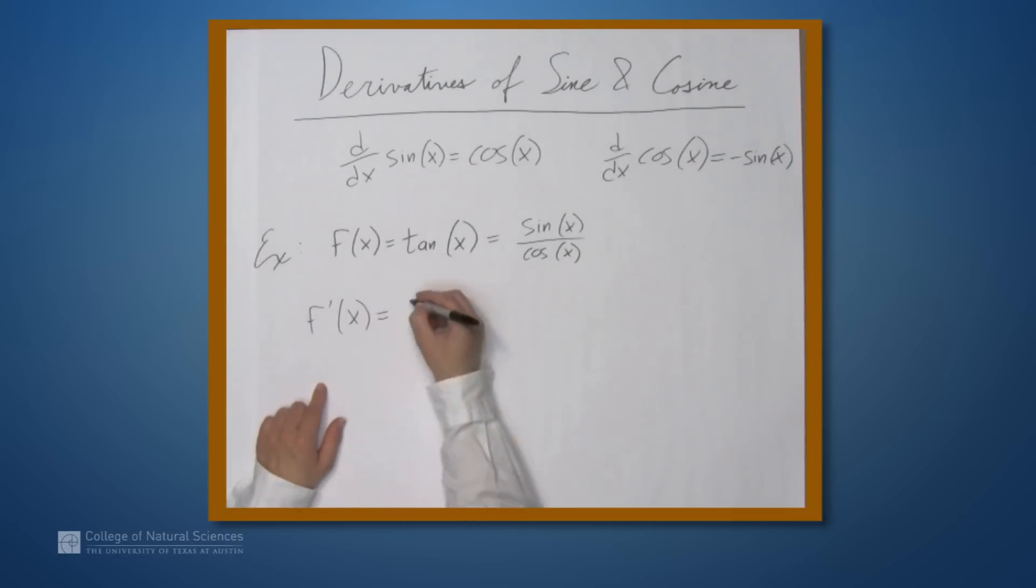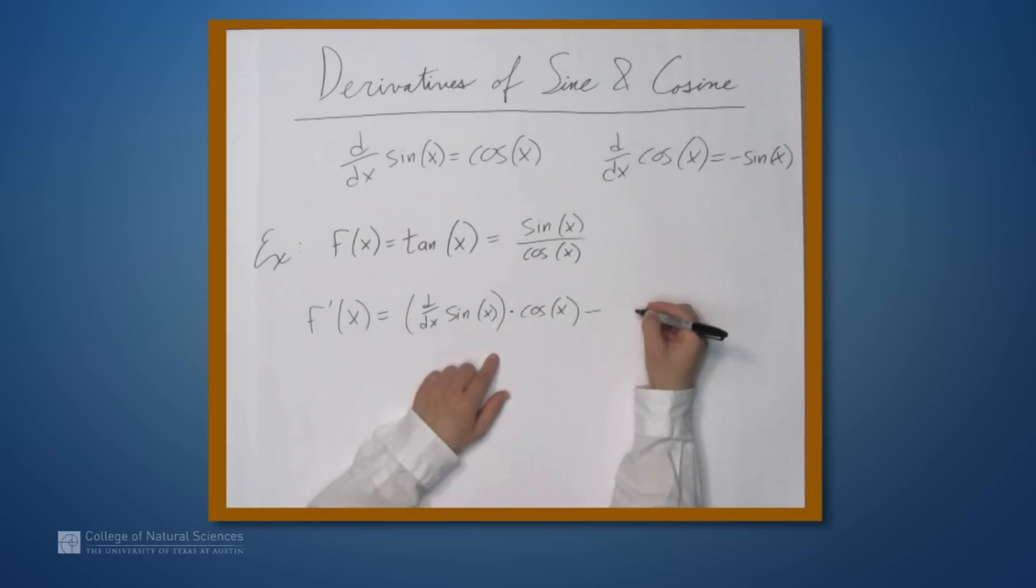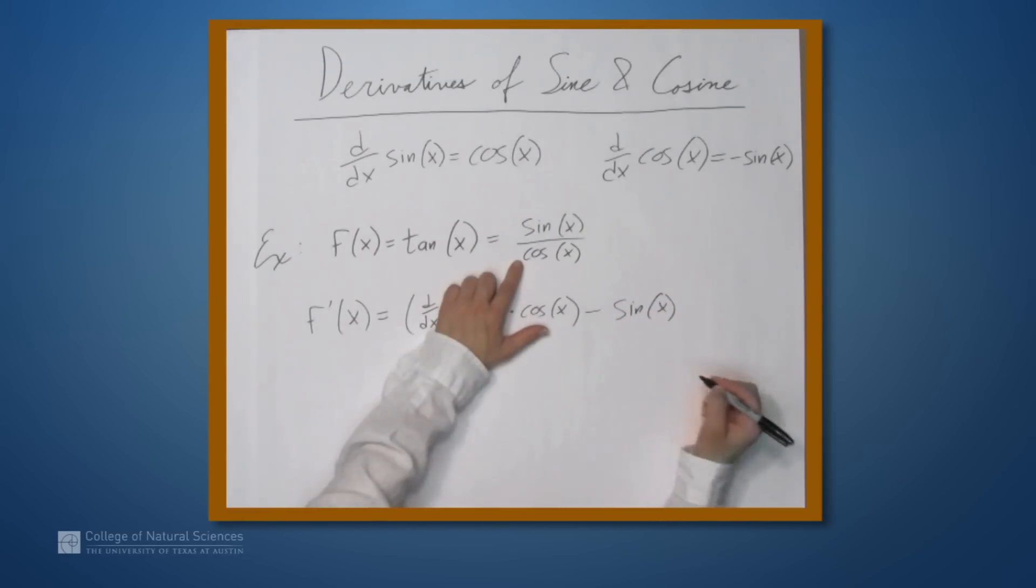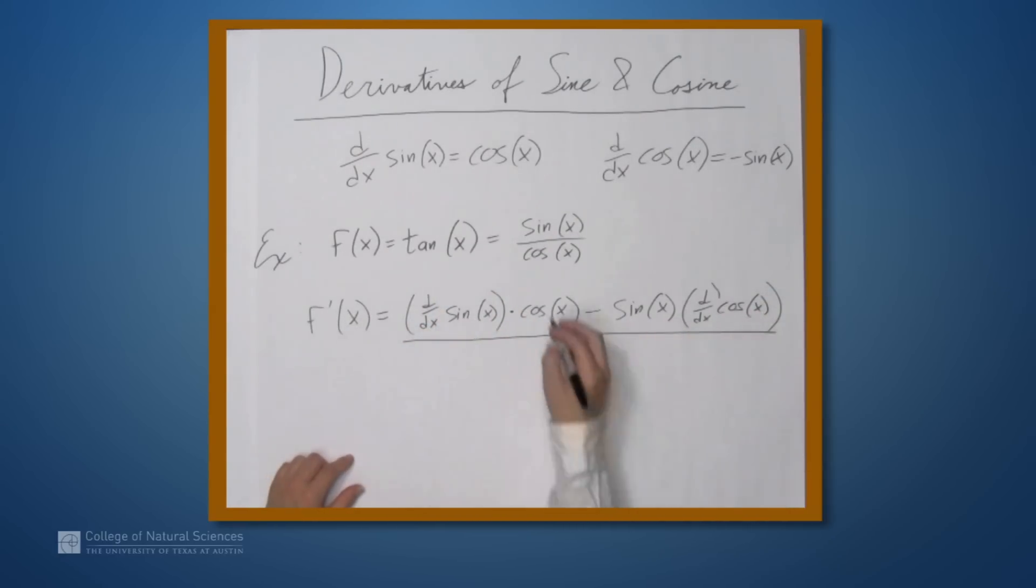So f prime of x is what? Well, it's the derivative of the numerator. So d by dx sine x times the denominator, so times cosine x minus the numerator, which is sine x times the derivative of the denominator. So times d by dx of cosine x. And then this whole thing over the denominator squared, so over cosine squared x.